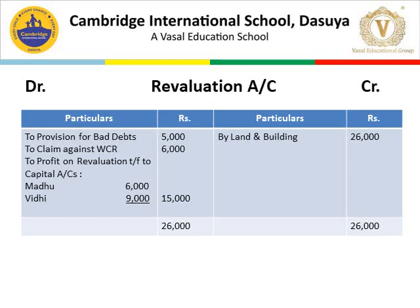For provision for doubtful debts: 5% of debtors which is Rs. 3 lakh equals Rs. 15,000. We already have a provision of Rs. 10,000, so we need to create Rs. 5,000 more provision. This is a loss for the organization, so Rs. 5,000 is written on the debit side of the revaluation account.